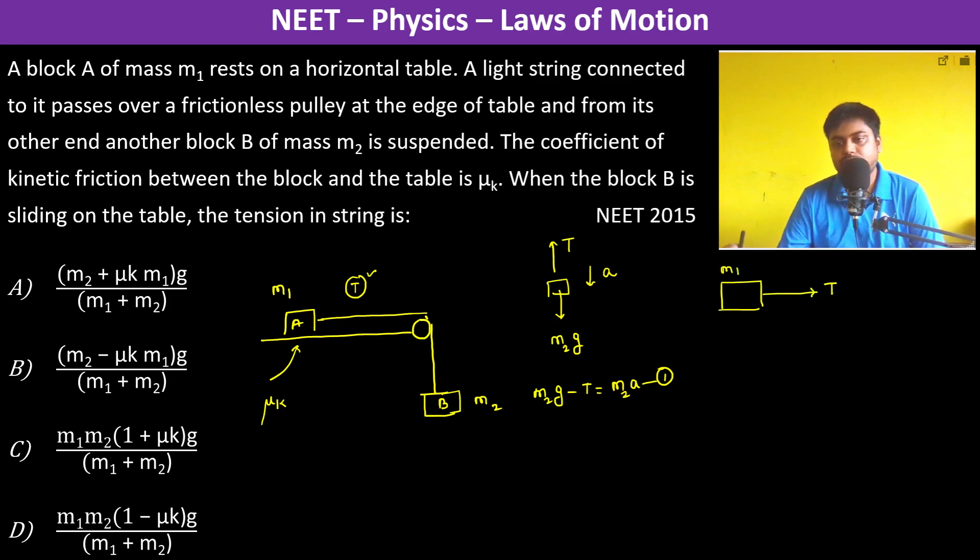This is T, this is M1g, this is N. Since it's sliding, the friction will be μk times N. Now N equals M1g, so therefore we can write T minus μk M1g equals M1 times a.